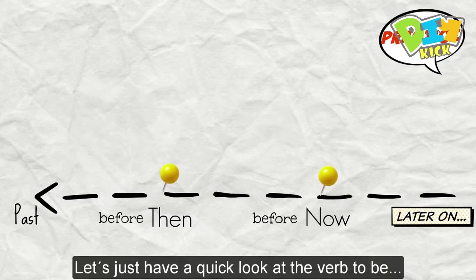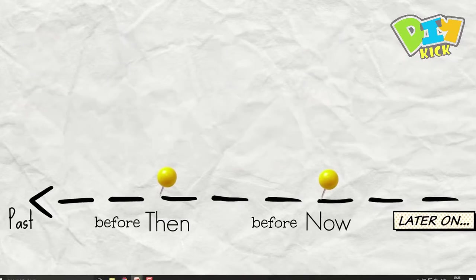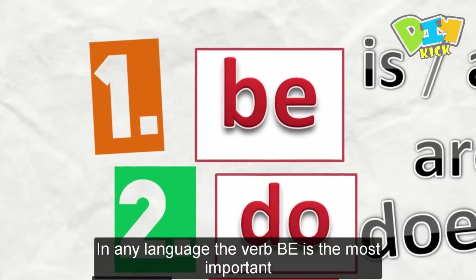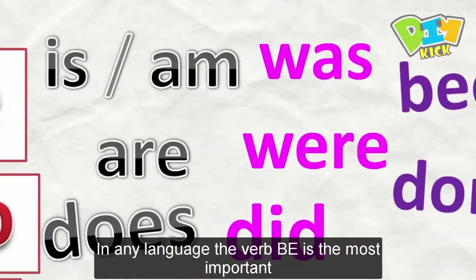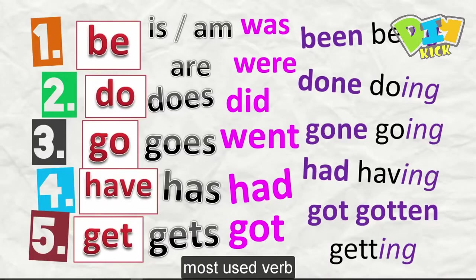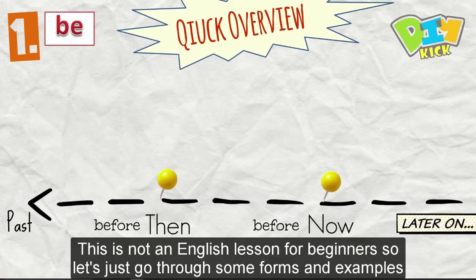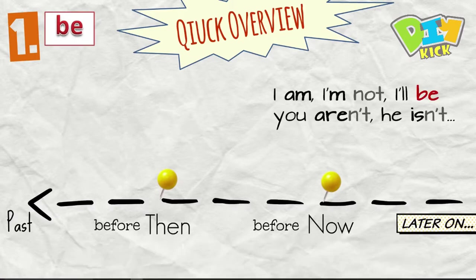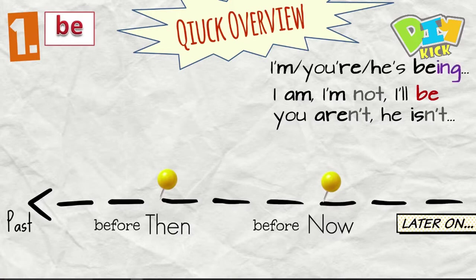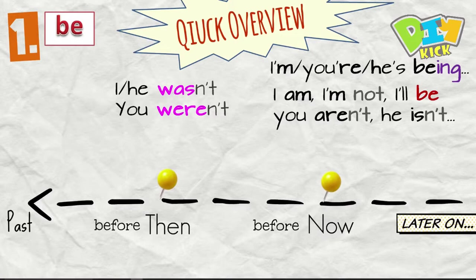Let's just have a quick look at the verb to be. In any language the verb be is the most important, most used verb. In English it has many forms. This is not an English lesson for beginners, so we'll just go through some of the forms and examples. Alright, so it's I am, you are, he is. Okay, then we say I'm being or you're being, he's being. In the past it's I was or I wasn't, he was, he wasn't, you were, you weren't.